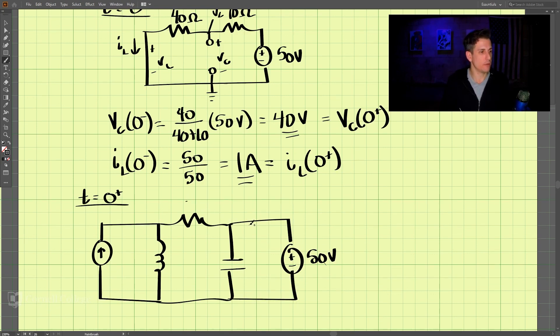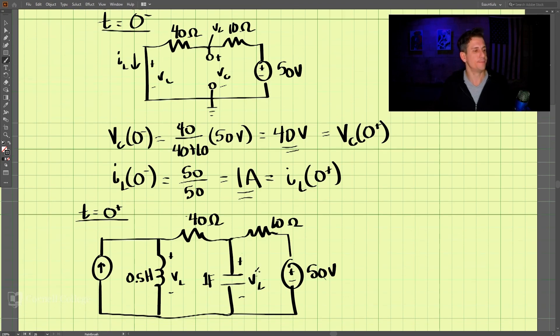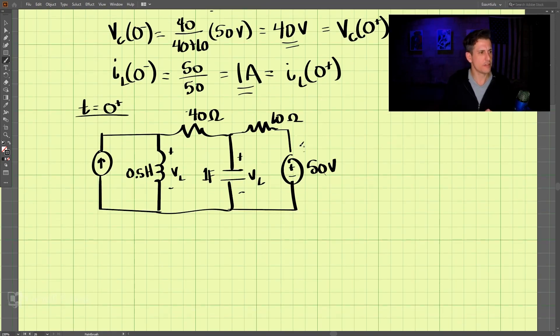Okay, now we have this circuit. Oh, I forgot the other resistor, there's another resistor here, and that is 10 ohms, this is 40 ohms, and the inductor is 0.5 henry. And we have the voltage across the inductor, and the capacitor is 1 farad, and this is the voltage across the capacitor. So this is the circuit we have, and this is 2 amps, and this is C, L and C.